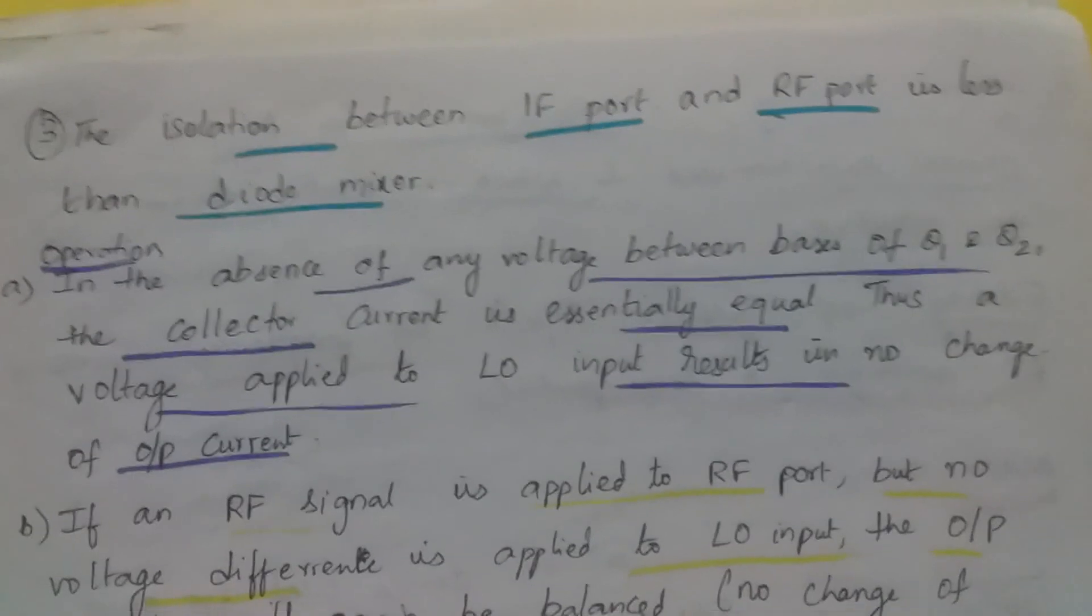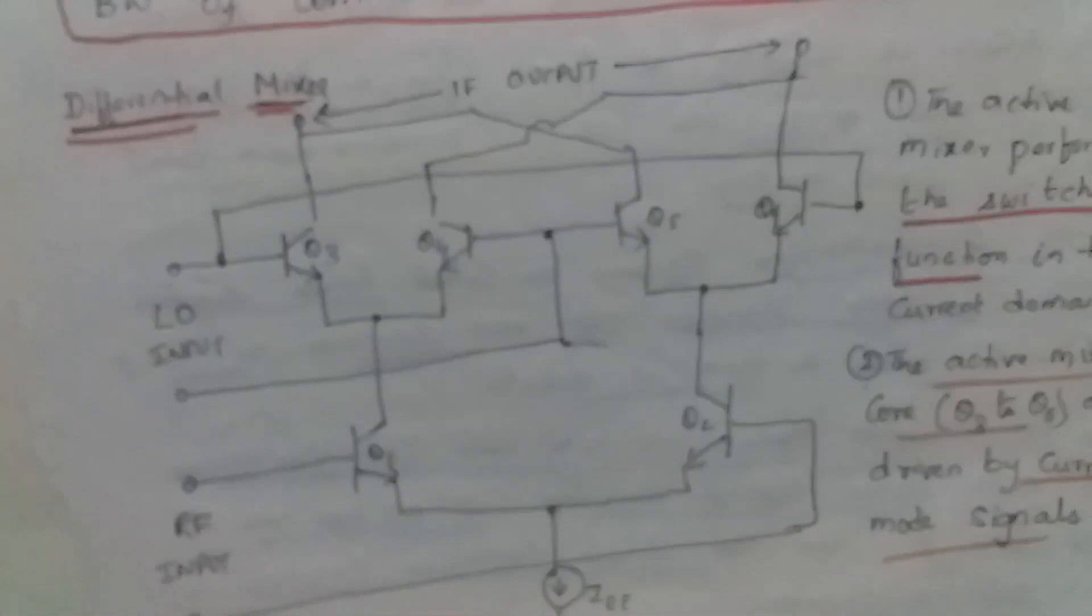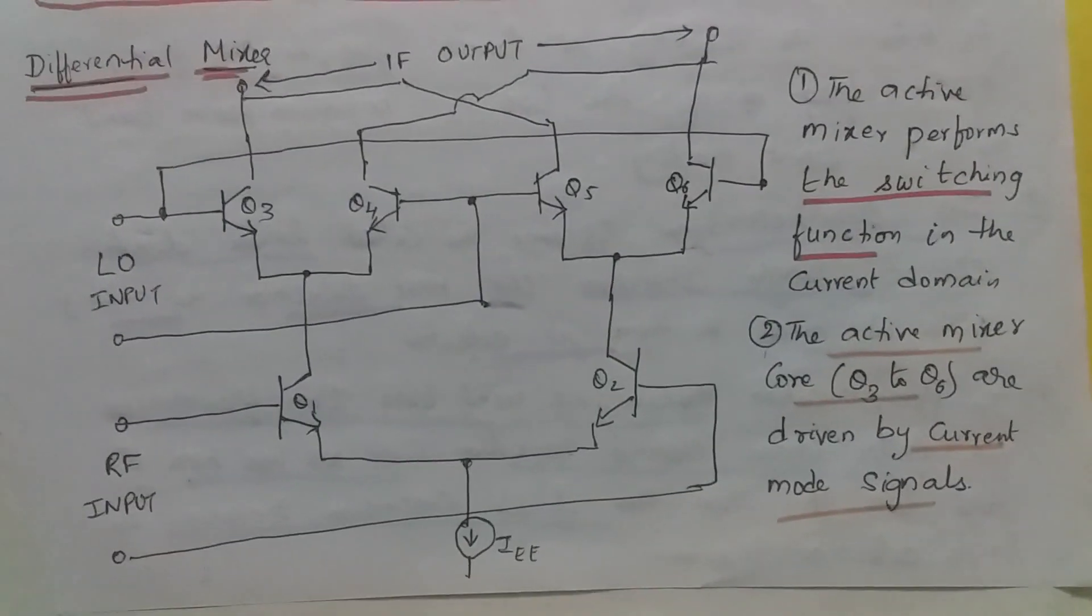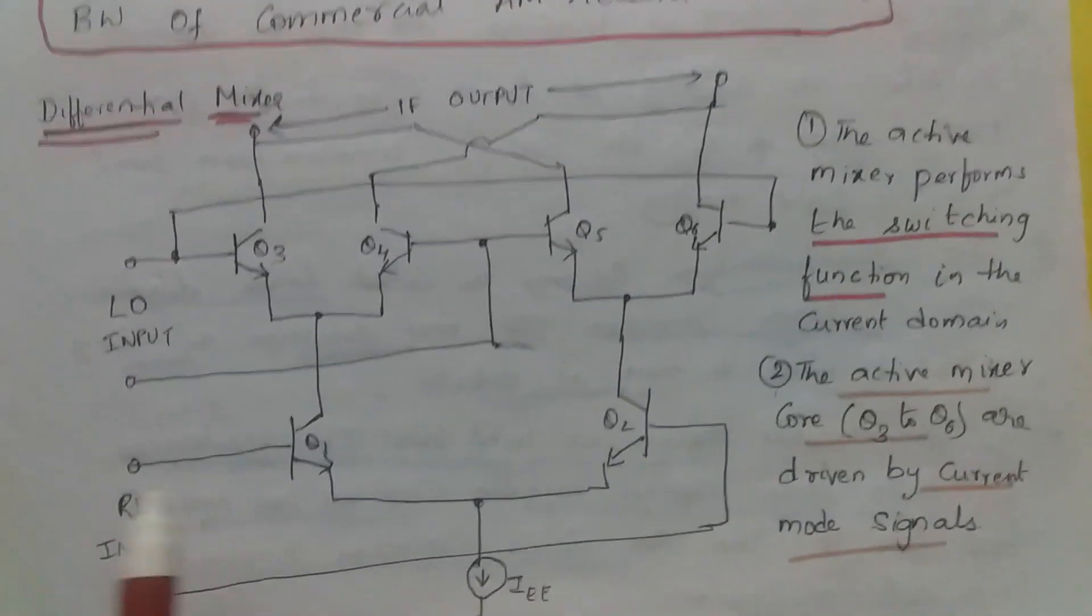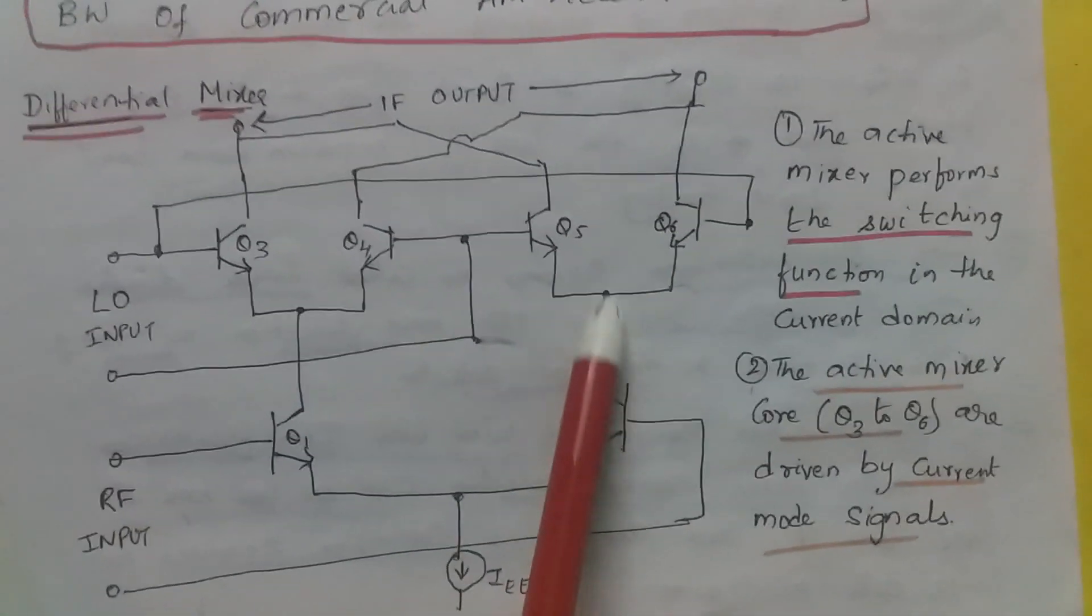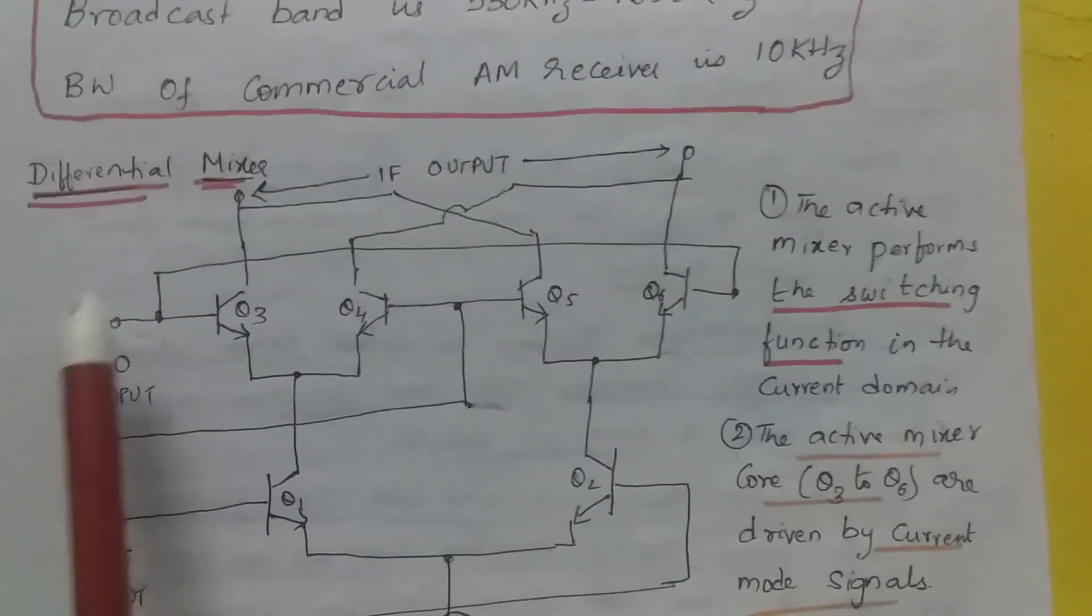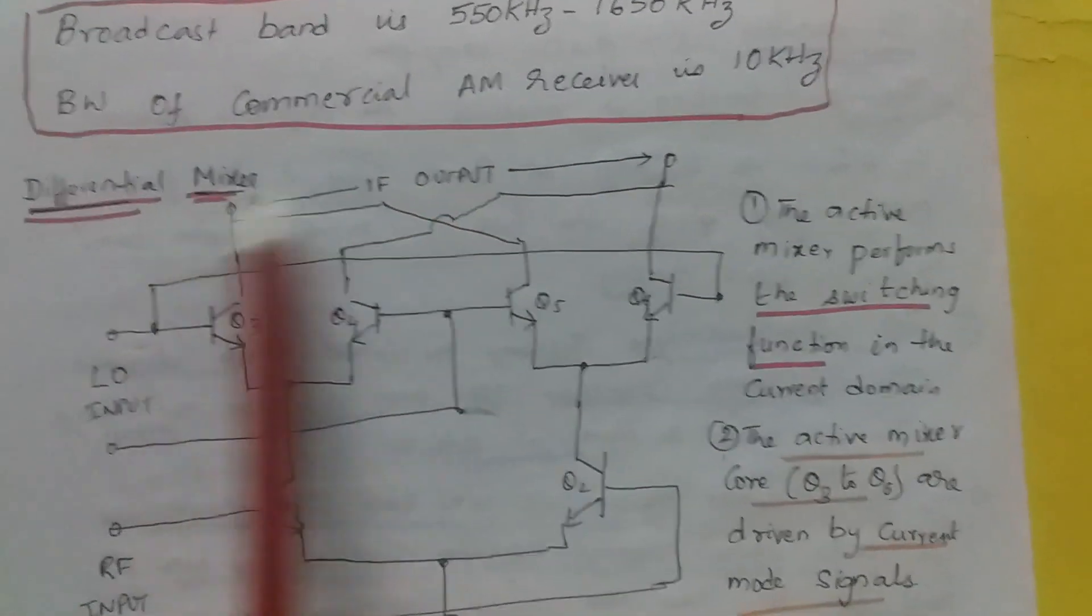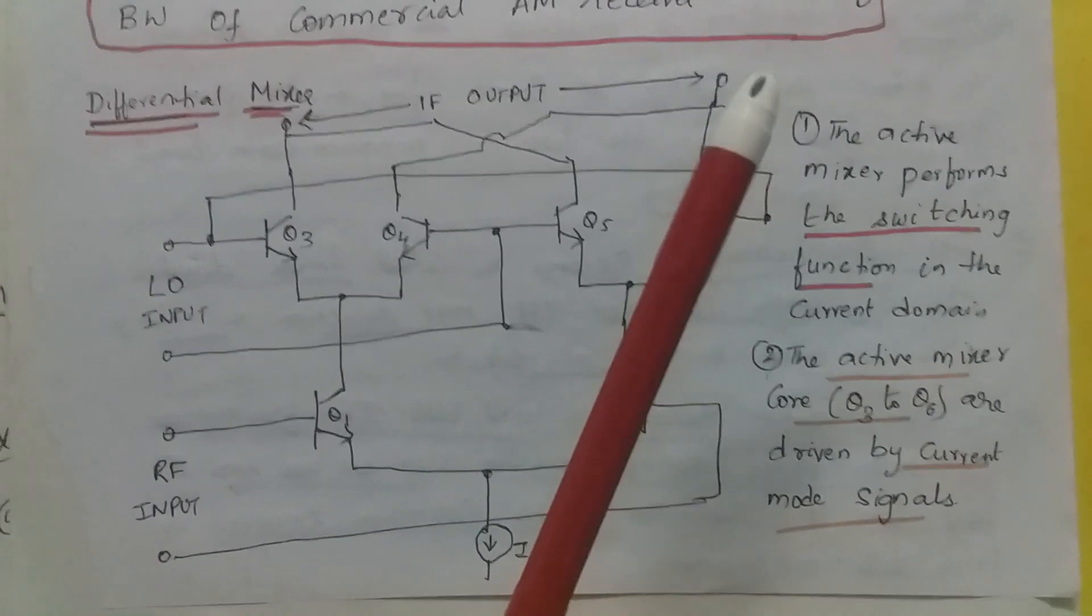The isolation between IF port and RF port is less than diode mixer. Let's understand the operation. This is the differential stage. Let's consider you are not applying RF. If there is no RF signal at the input of receiver, this is cutoff. There is no current flowing in the collector of Q1 and Q2. You don't find any voltage. The output at this point and this point is the same. IF output is basically the difference of both. Since it is equal, it cancels out and there is no output available.